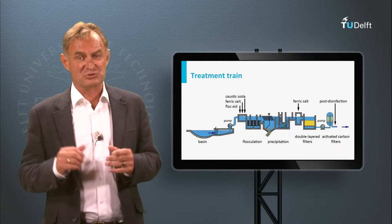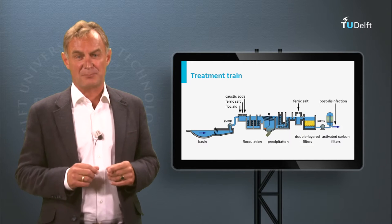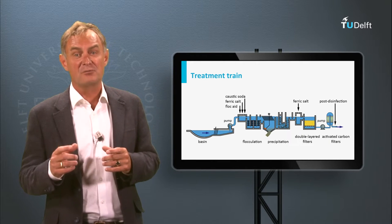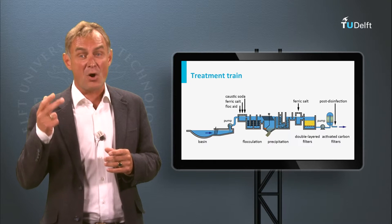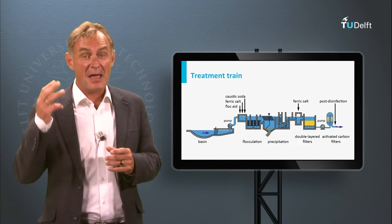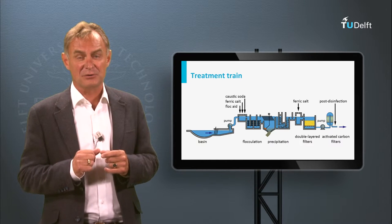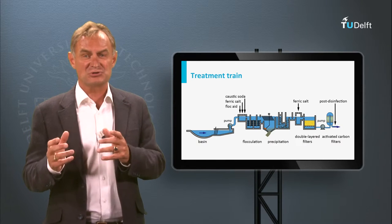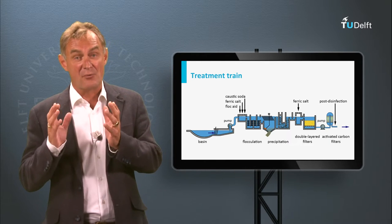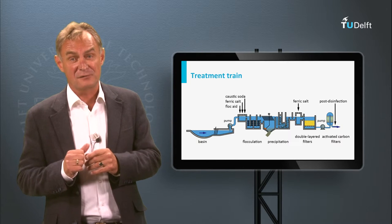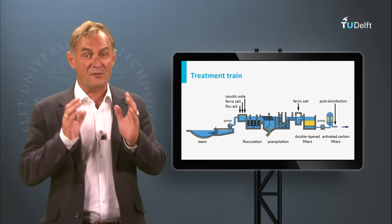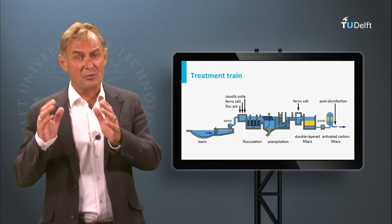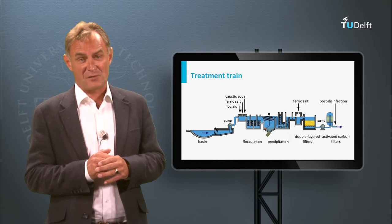Surface water after storage needs extensive treatment. Conventionally, the main objectives were to remove turbidity, odor, taste, and to disinfect the water. A conventional treatment train, consisting of coagulation, where iron or aluminium salts are dosed, floc formation, floc removal, rapid sand filtration, and chlorination, meets these objectives.